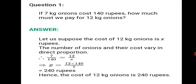Write the final answer: hence, the cost of 12 kg onions is 240 rupees. What have we done in this sum? We assumed the missing part to be X — that is the cost of 12 kg onions. Then we wrote a statement that the quantities vary in direct proportion. Then we wrote them in proportion: 7 upon 140 is equal to 12 upon X, and worked it out by cross multiplying. This way you have to write your steps and then the final answer in statement form. All the sums will be done in similar steps.